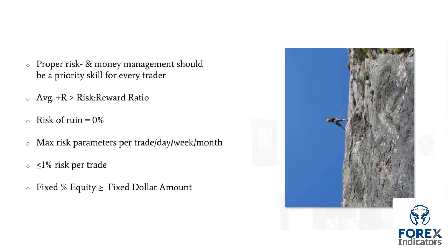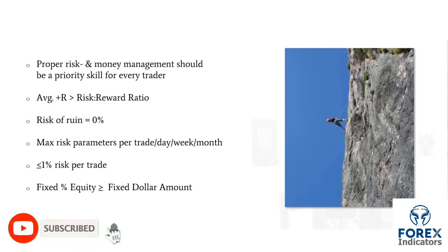The risk-to-reward ratio has two numbers, but average plus R is just one number. Average plus R is basically asking: across all your wins and losses, when you win, how much are you winning on average? Are you winning one times your risk, or two times your risk? Because it's one number and your risk is always going to be a multiple of one, I personally prefer to use average plus R versus risk-to-reward ratio.